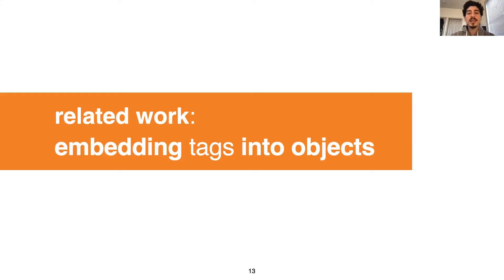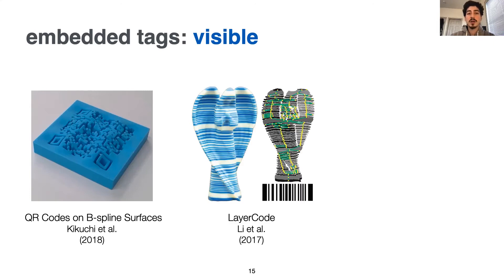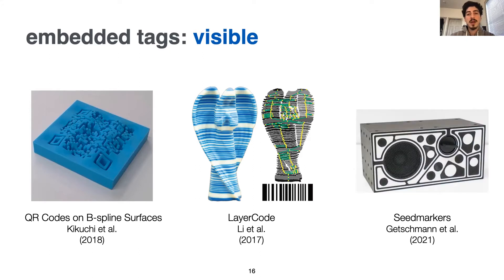So how about we instead directly embed the tags into the object geometry? Let me talk about previous research on this. Some projects suggest carving or adding visible 2D tags on the surface of the object such as a QR code, a linear barcode, or a more customized pattern. As you can see, all of these tags are visible and they impact the look of the object.